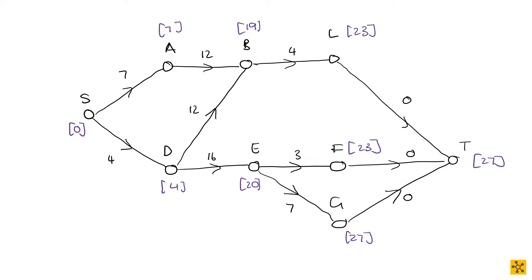So we're going to have T here, and we're going to say the earliest starting time of T is going to be T minus the time it takes to actually complete task T. So we have 27 minus 0, and we have 27 minus 0, and we have 27 minus 0. And then we're going to take the minimum of any of those three. All of them are equal to 27, so we know that the latest start time for T is 27.